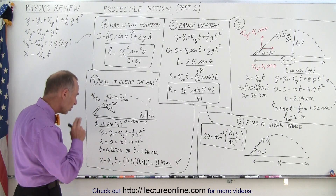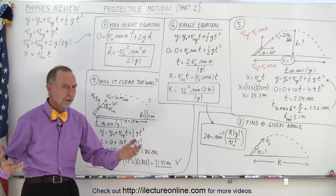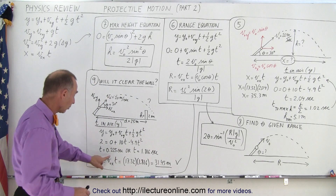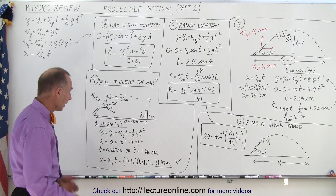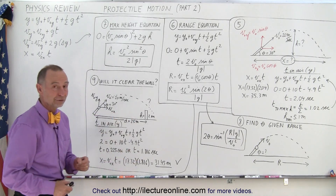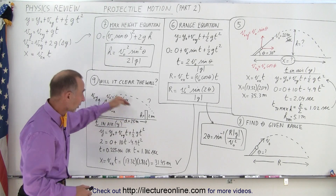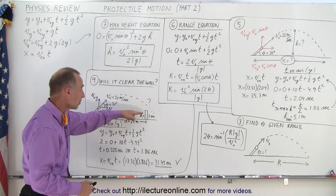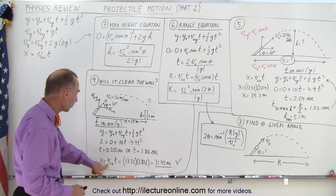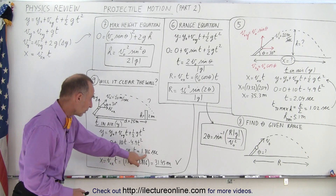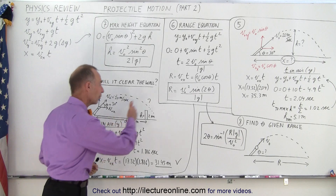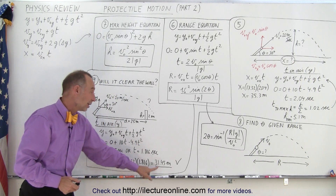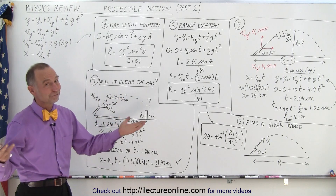Solving for time gives two answers: 0.225 seconds and 1.816 seconds. You reach two meters on the way up and two meters on the way down, so you have two separate times. You need the one on the way down: 1.816 seconds. Then multiply the velocity in the x-direction — 17.32 — times 1.816, and you get 31.45 meters, which is further than the wall at 25 meters. So you reach a height of two meters beyond the wall — you will not hit the wall. If that number had been less than 25 meters, you either would hit the wall or hit the ground before reaching the wall.